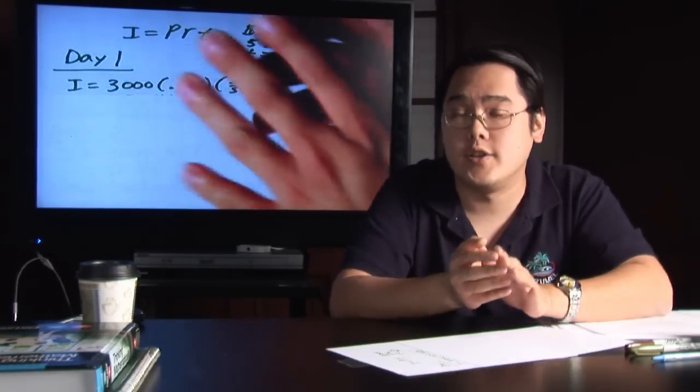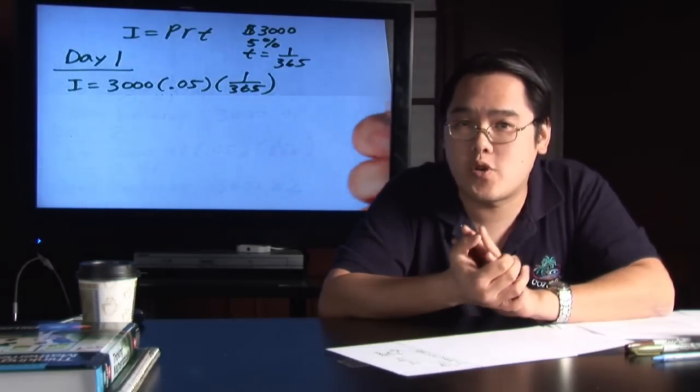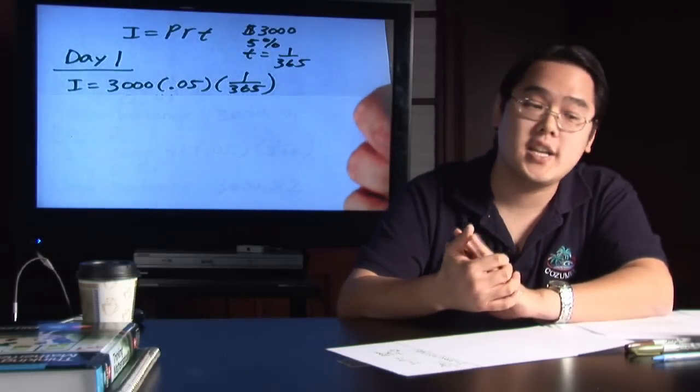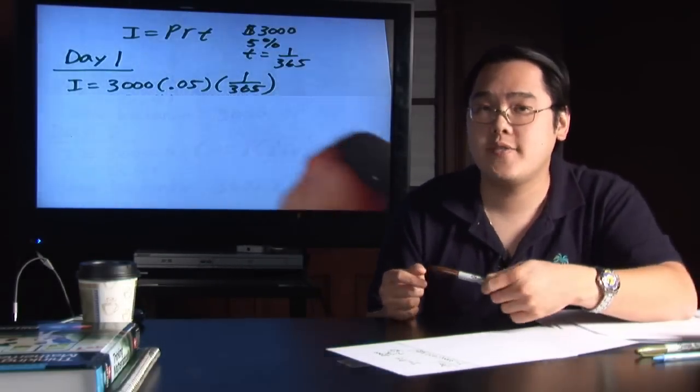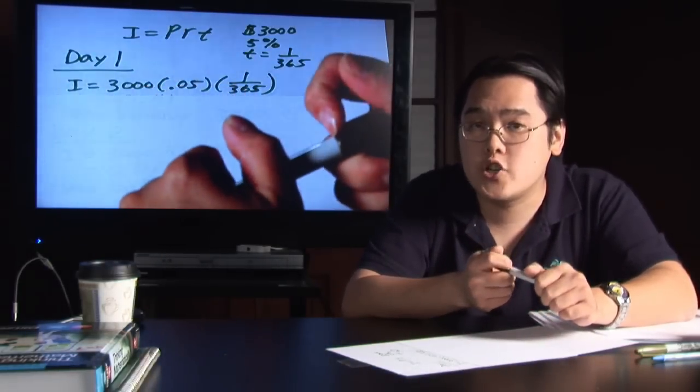Now the root of how you do that is in the famous interest formula, the simple interest formula, I equals PRT. Now if you remember what they stand for, I is your interest, P is your principal, how much you're putting in, R is your rate of interest,